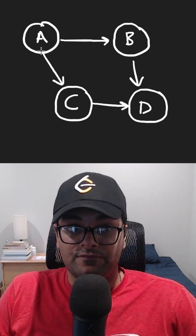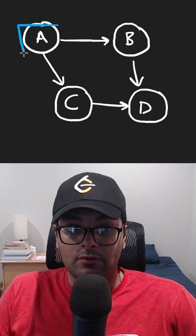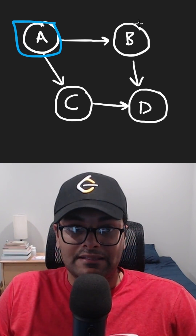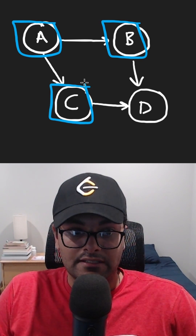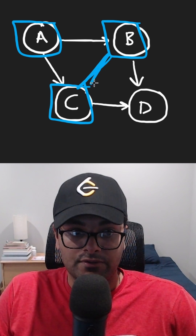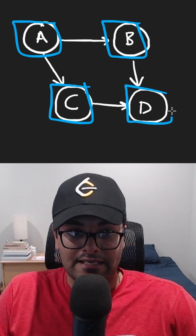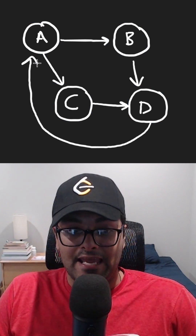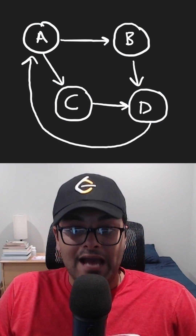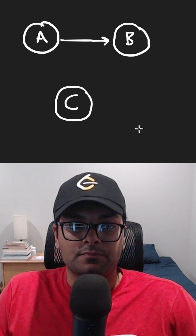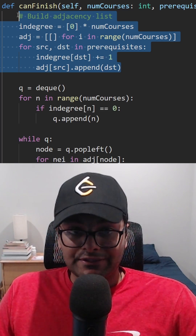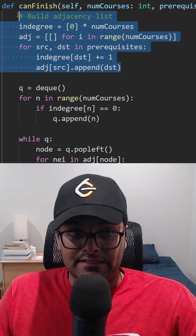In this example, it is. We first start out with course A. After A, we can take either B or C. Then after we take both of them, we can take D. But if we add an edge from D back to A, it is now no longer possible. So this problem is all about cycle detection.